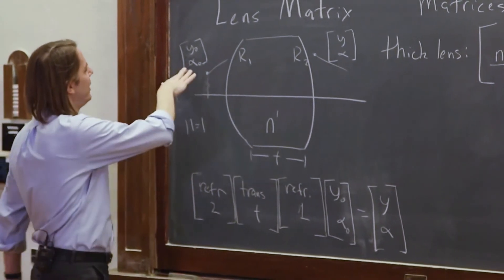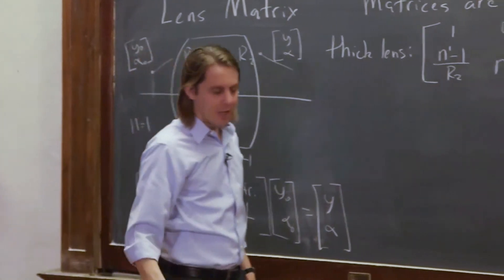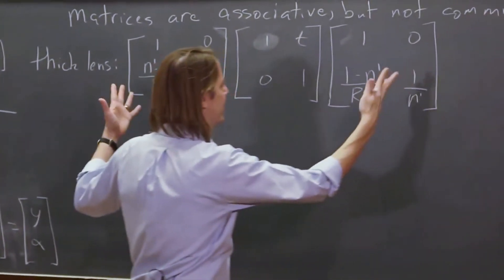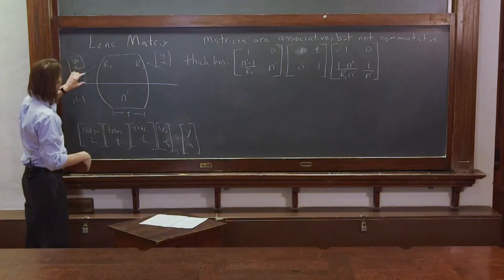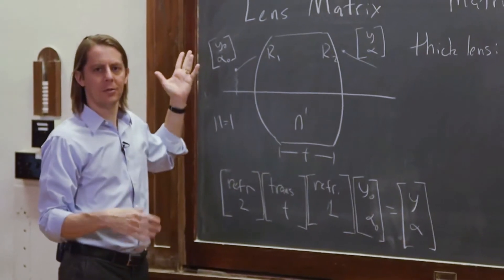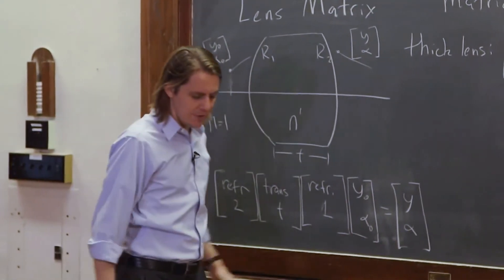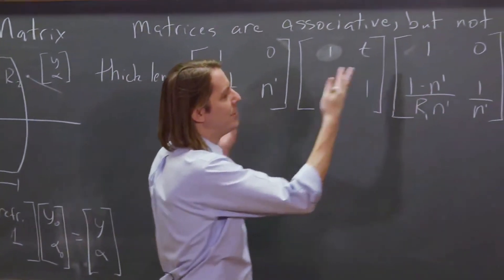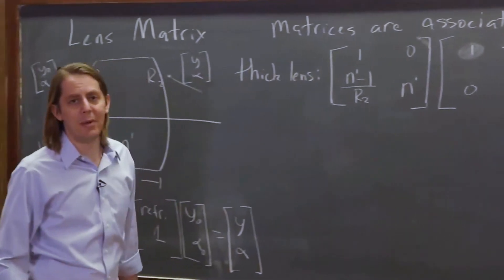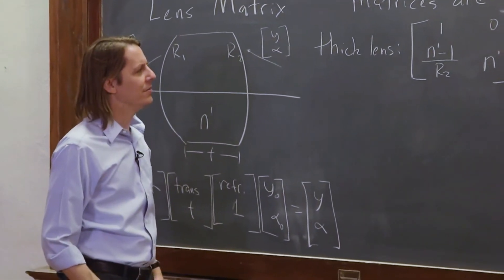And those would then multiply y naught alpha naught. But I'm not even going to write that because really this is the matrix for the thick lens. And it's not just for a specific y naught alpha naught. It's for any y naught alpha naught. So it really is the matrix. So you can multiply that out. And you see it makes a little bit of an algebraic mess. It's not that bad. It's really nothing that we're going to get a lot of insight from.